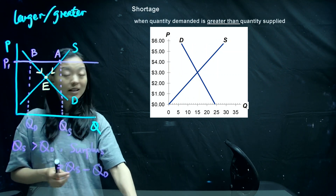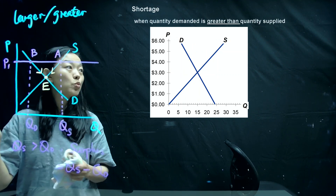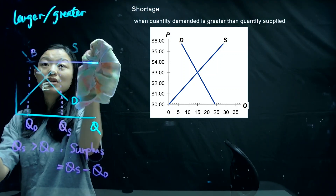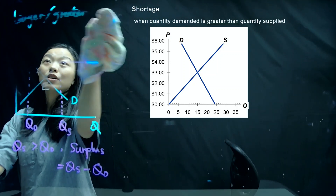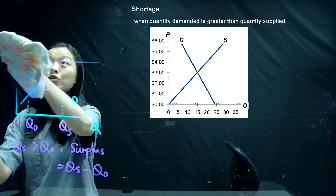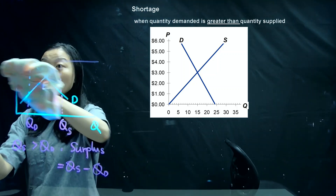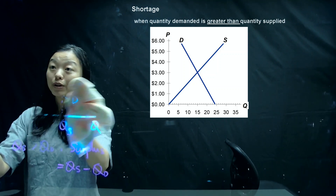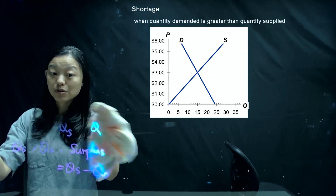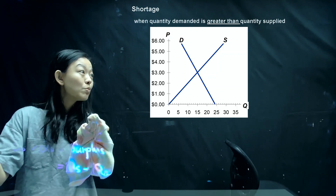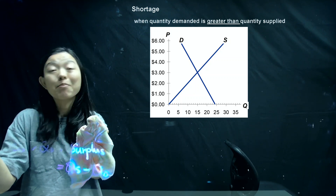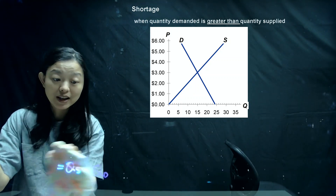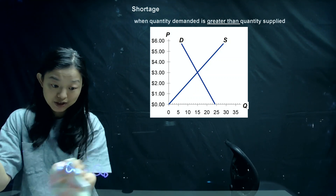Now let's look at another case — shortage. Shortage means consumers would like to buy more; however, there are not enough products in the market. Shortage means quantity demanded is greater than quantity supplied.